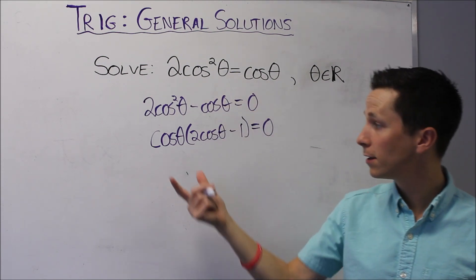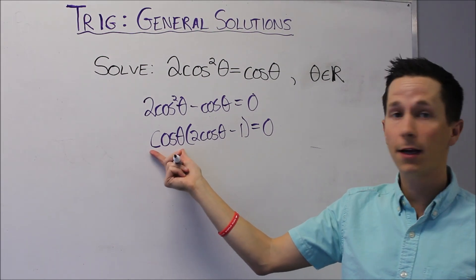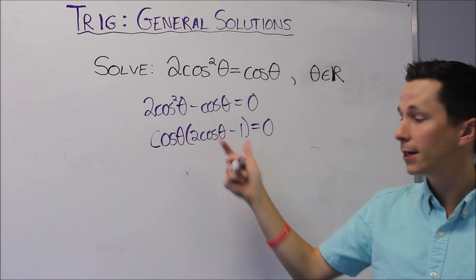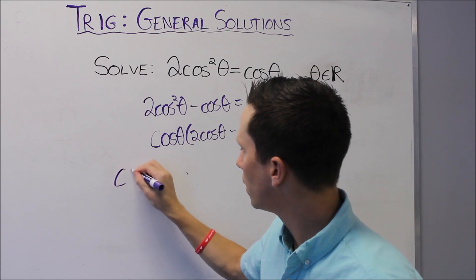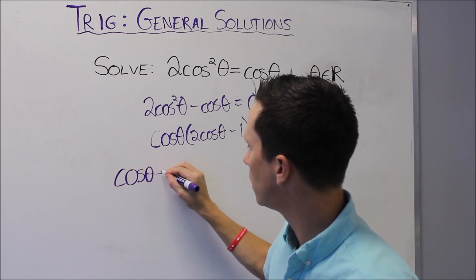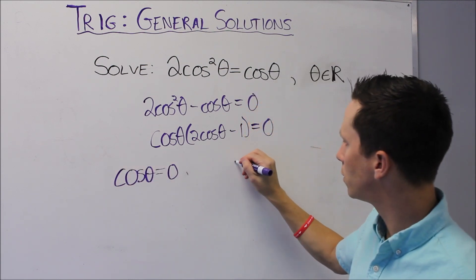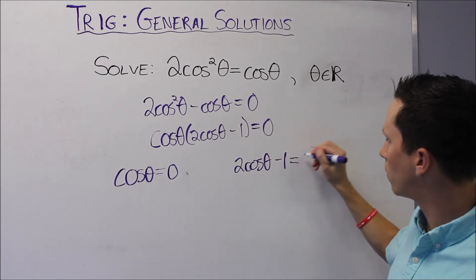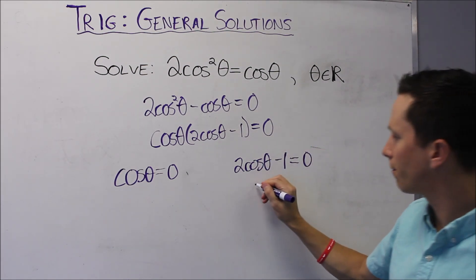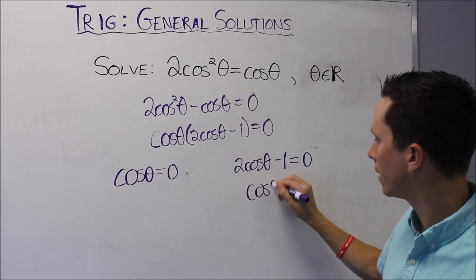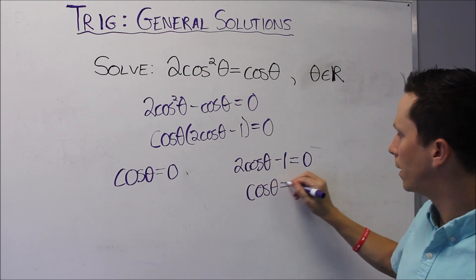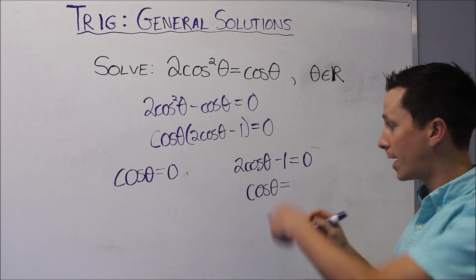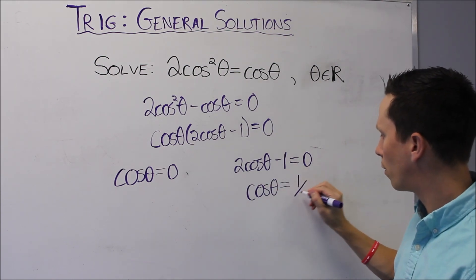Now I can factor a cos theta. Now that it's factored, it's clear to see we need cos theta equals 0, or this bracket to equal 0. So either cos theta equals 0, or 2 cos theta minus 1 equals 0. If I solve for cos theta here, I get cos theta equals 1 over 2.